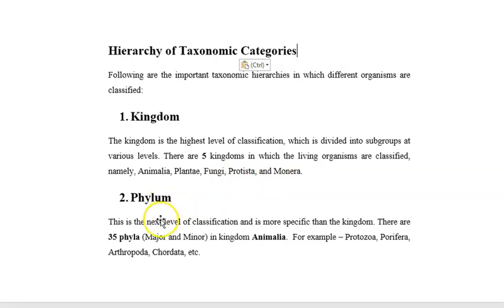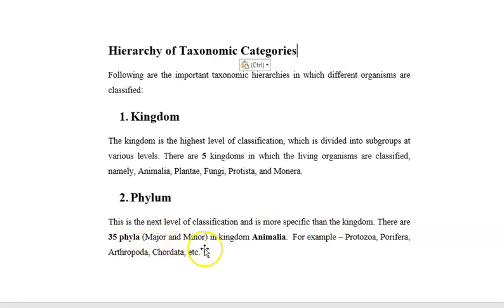The second category is phylum. This is the next level of classification and is more specific than kingdom. There are 35 phyla including major phyla and minor phyla in kingdom Animalia. For example, phyla Protozoa, Porifera, Arthropoda, Cnidaria, etc.